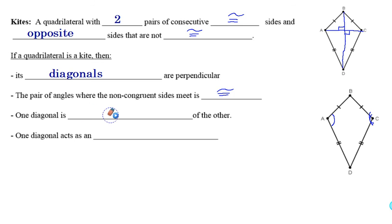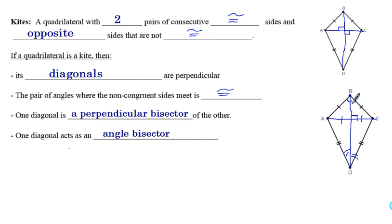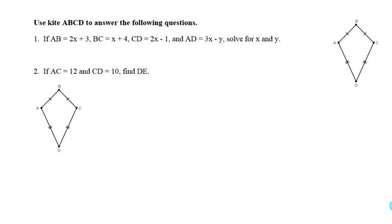One diagonal is a perpendicular bisector of the other — the long diagonal is a perpendicular bisector of the shorter one, so it cuts it in half and meets at a 90-degree angle. Finally, one of the diagonals acts as an angle bisector, and that is the same one acting as the perpendicular bisector. So not only does it cut the other diagonal in half, it also cuts those angles in half. Those are the properties of kites.